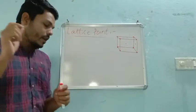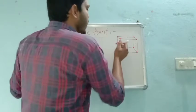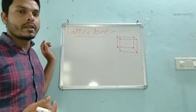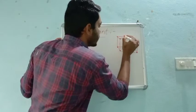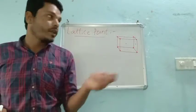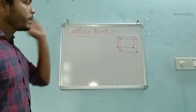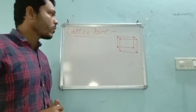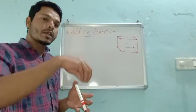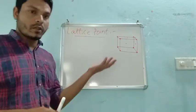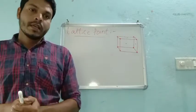Coming to lattice points: the point where the atom is present is nothing but a lattice point. Atoms may be present at the corner, at the center, at the faces, or at the edge center of the unit cell. So wherever atoms are located — those positions are the lattice points.